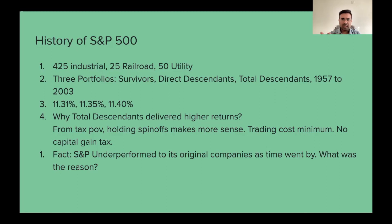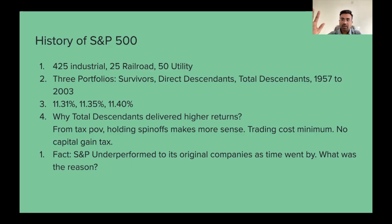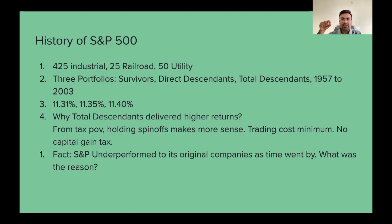The S&P 500, as we have seen with index funds and ETFs, every year there are new companies that replace the old companies — this is called rebalancing. Jeremy Siegel, when checking performance, saw that the original S&P 500 companies — industrial, railroad, utility — these three broad sectors outperformed when the S&P 500 had no changes, compared to when S&P 500 constantly added new companies.